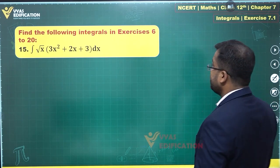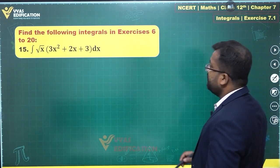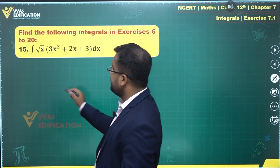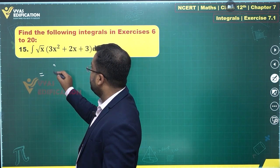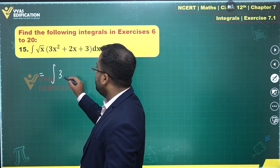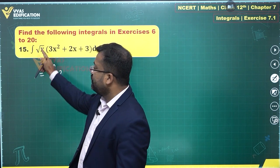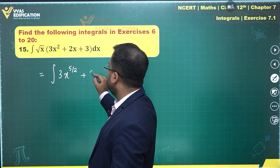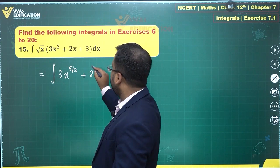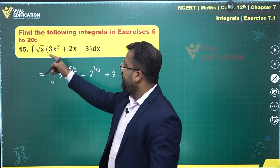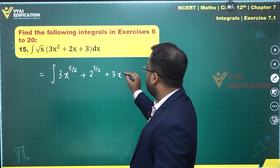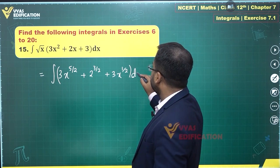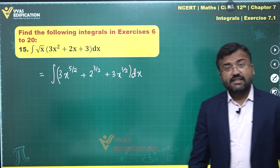The 15th question we have is the integral of root x times 3x square plus 2x plus 3 dx. Let's multiply by that root x inside, so this becomes integral of 3x square root x. Now power 2 power 1/2 they will add to power 5/2, plus 2 times power 1 power 1/2 will be power 3/2, plus 3 times root x which is x power 1/2 dx.